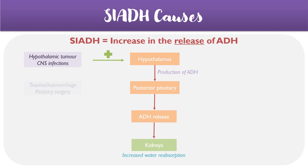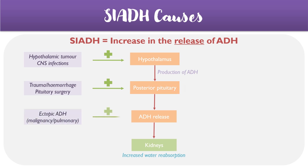Alternatively, there could be pituitary tumours or pituitary surgery, which results in more ADH leaking from the posterior pituitary gland into the blood. Other causes may include ectopic ADH sources, and the most common example is small cell lung cancer, where the cancer cells begin secreting ADH into the blood.